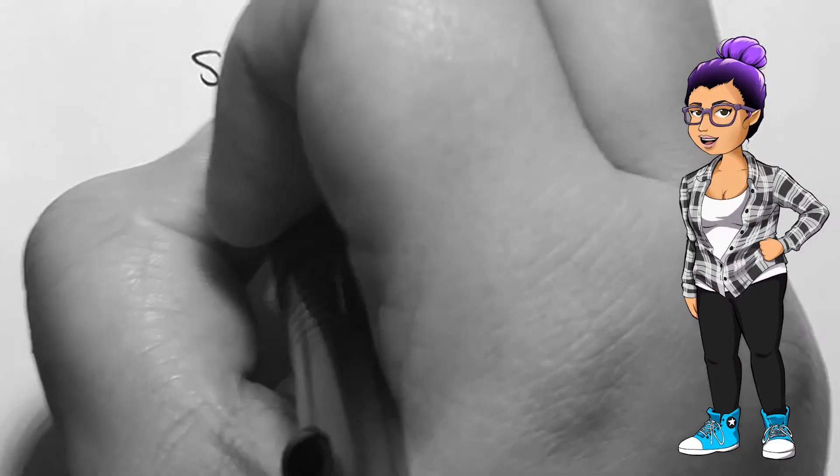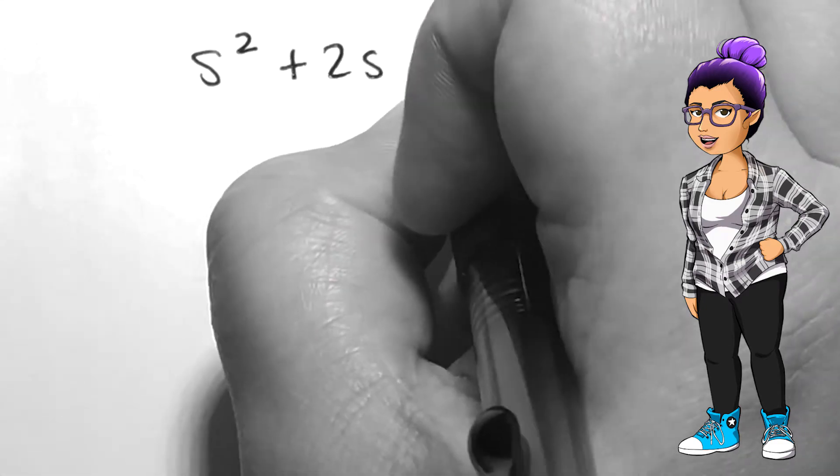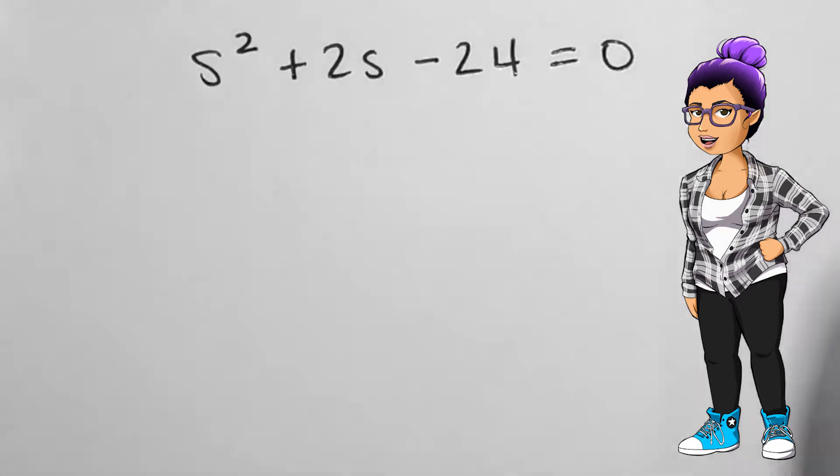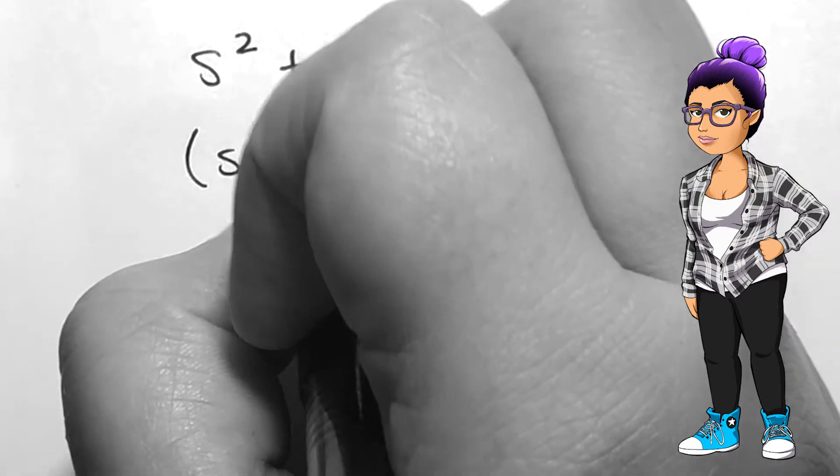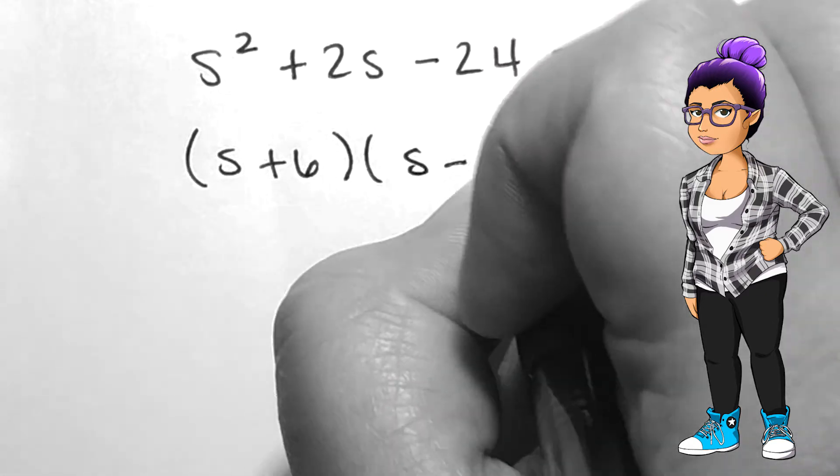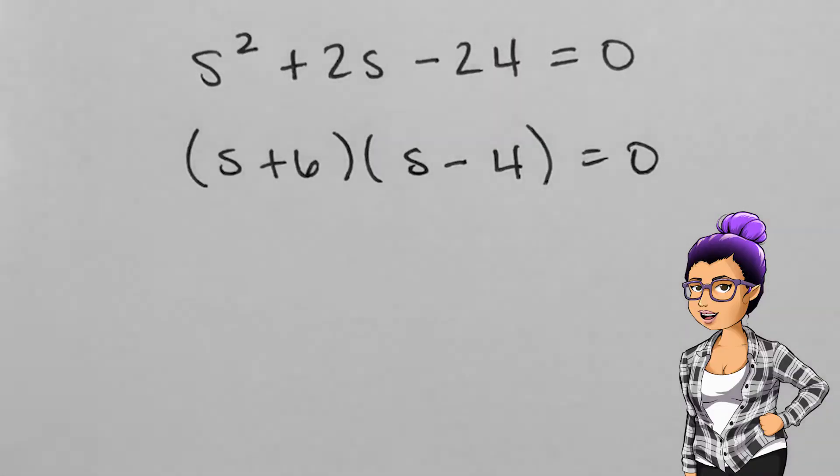If we want to solve s squared plus 2s minus 24 equals zero, we can factor the left-hand side into s plus 6 times s minus 4.